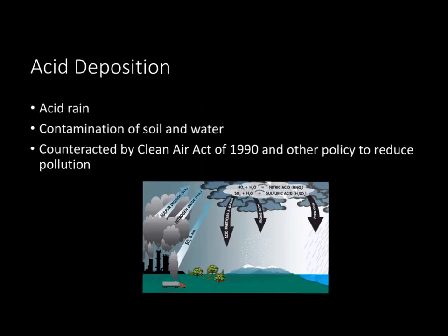On the topic of air pollution, let's talk about acid deposition — basically, think of it as acid rain. It forms when sulfur dioxide and nitric oxide are converted into sulfuric acid and nitric acid, which then fall to earth as precipitation. This is bad because it contaminates soil and water, and kills ecosystems. It has begun to be counteracted by things like the Clean Air Act and other policies, but it really won't be solved until we reduce those levels of air pollution.